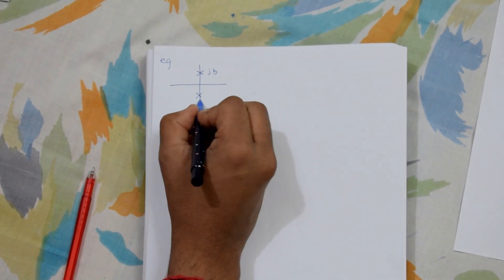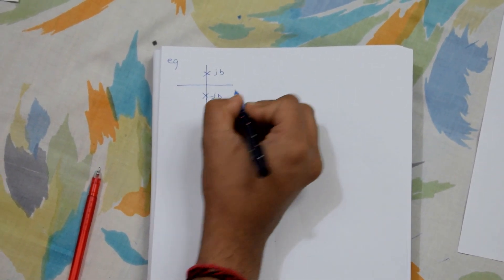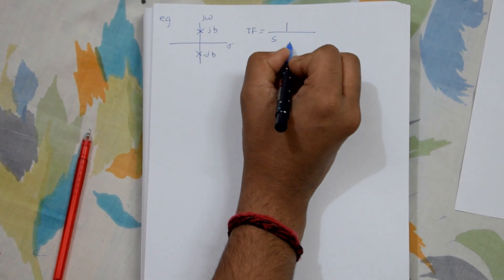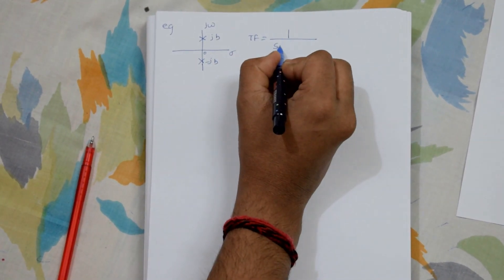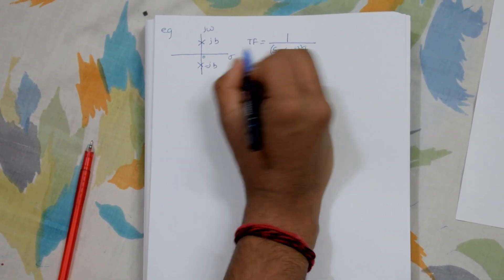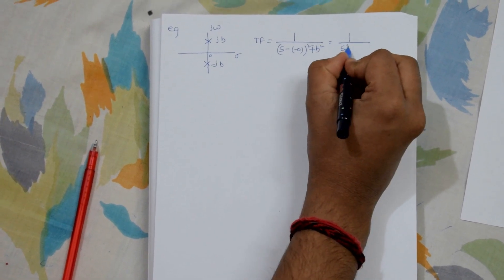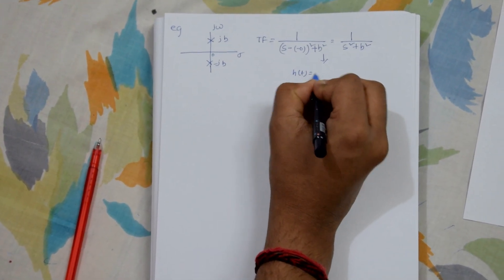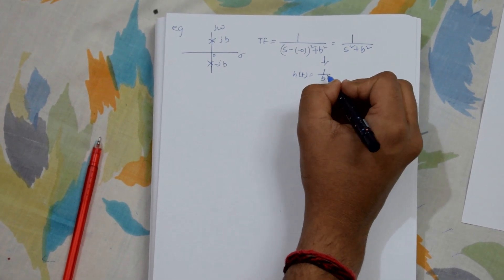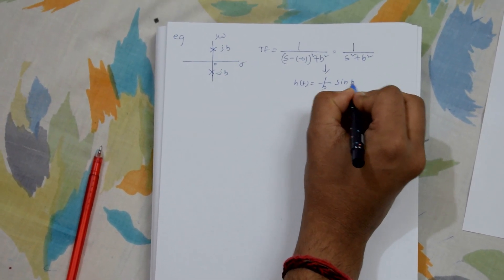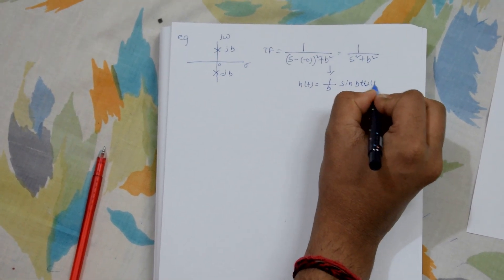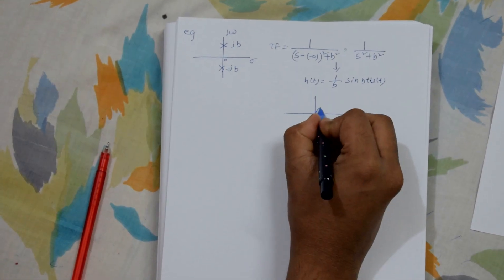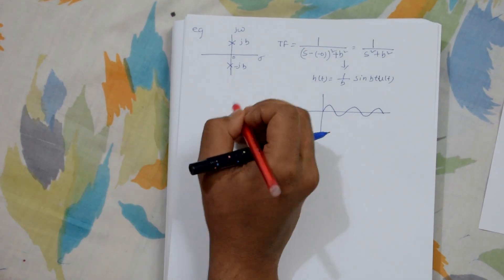Now let's take complex poles on the jω axis. The transfer function is 1 by (s² + b²), since the real part is zero. The inverse Laplace transform gives (1/b) · sin(bt) · u(t). The graph of this is a pure sinusoid, which is marginally stable.